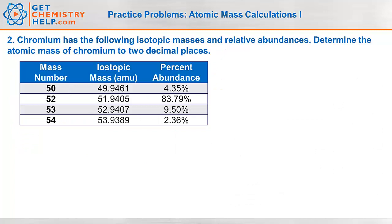Okay, problem number two says chromium has the following isotopic masses and relative abundances. Determine the atomic mass of chromium out to two decimal places. So basically what that means is it's telling me not to worry about the significant digits and just take everything to two decimal places. So that makes it a little bit easier on us.